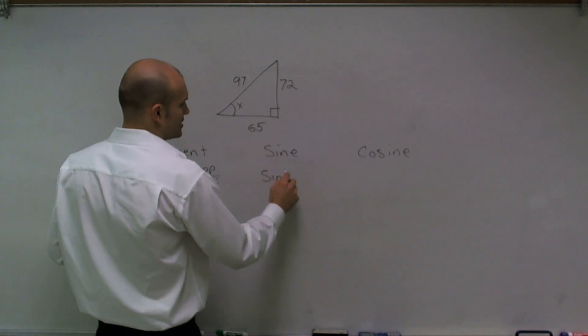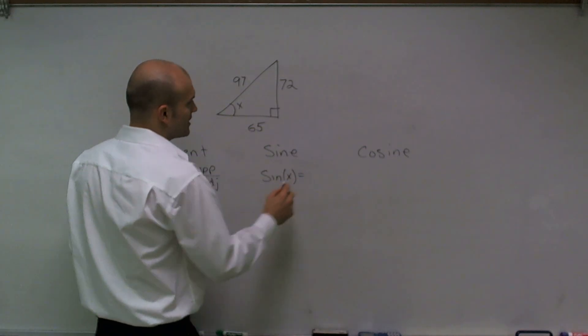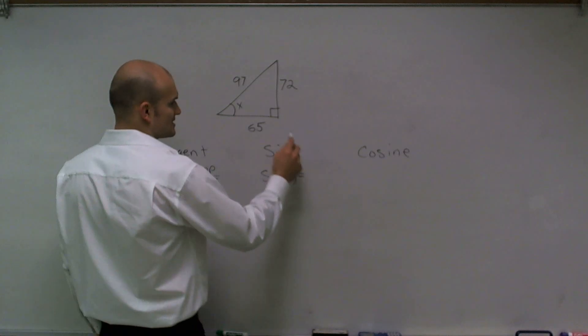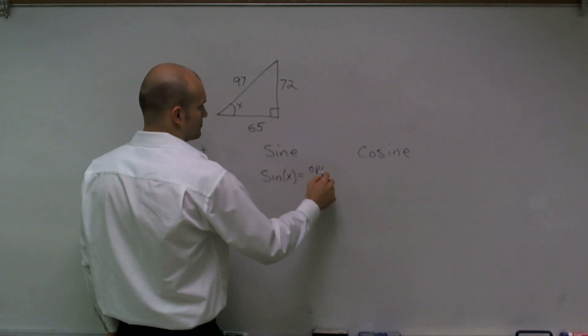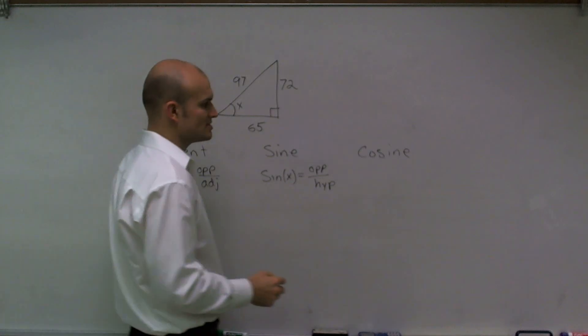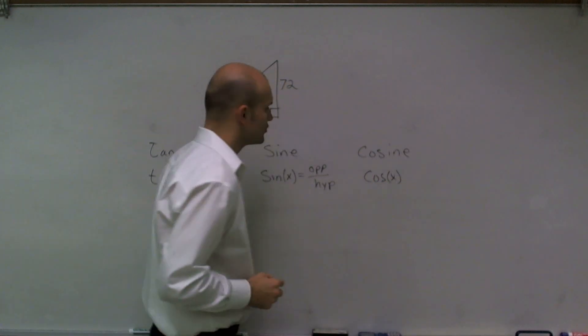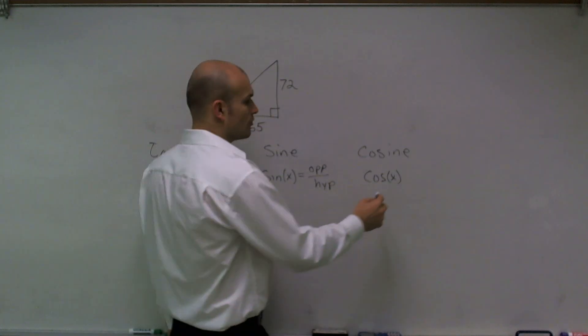The sine function of an angle x represents the ratio of your opposite side length over your hypotenuse. And the cosine function represents the ratio of your adjacent side over your hypotenuse.